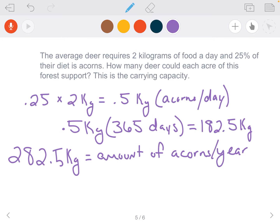If we look at the total number we previously calculated for the amount that our forest is producing of acorns, we get 282.5 kilograms. That means in this particular forest, only one deer can survive. So the carrying capacity for this forest is one deer. That's it. That's not a lot.